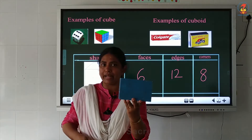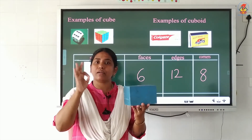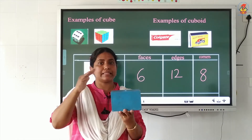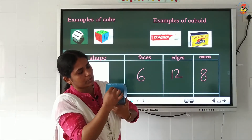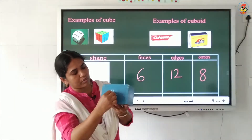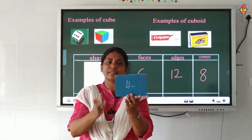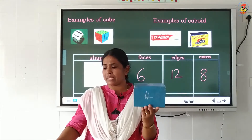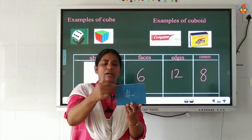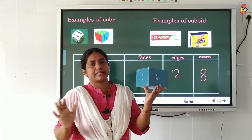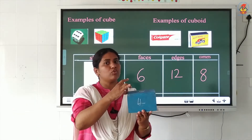Look children — this is a cuboid. I told you that for each and every solid shape there are faces, edges, and corners. First we will discuss the faces of a cuboid. Here I will mark 1, 2, 3, 4 around the sides, at the top 5, and down 6. So how many faces are there for a cuboid? 6 faces — same as our cube. Cuboid also has 6 faces.